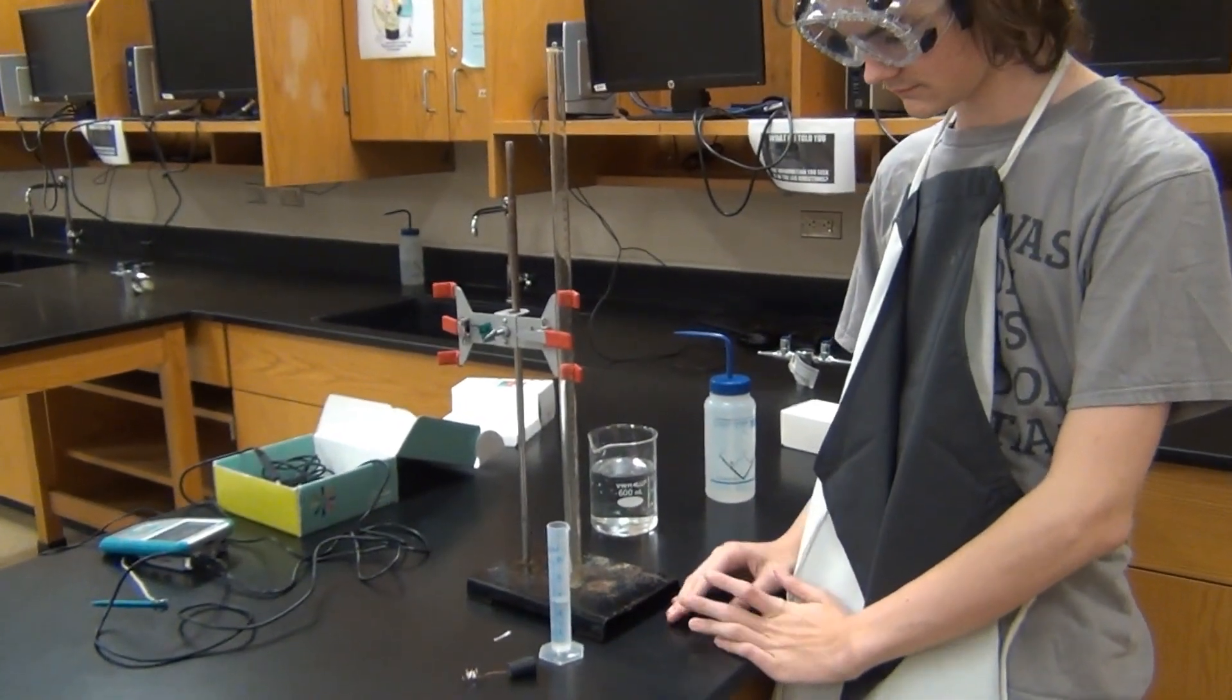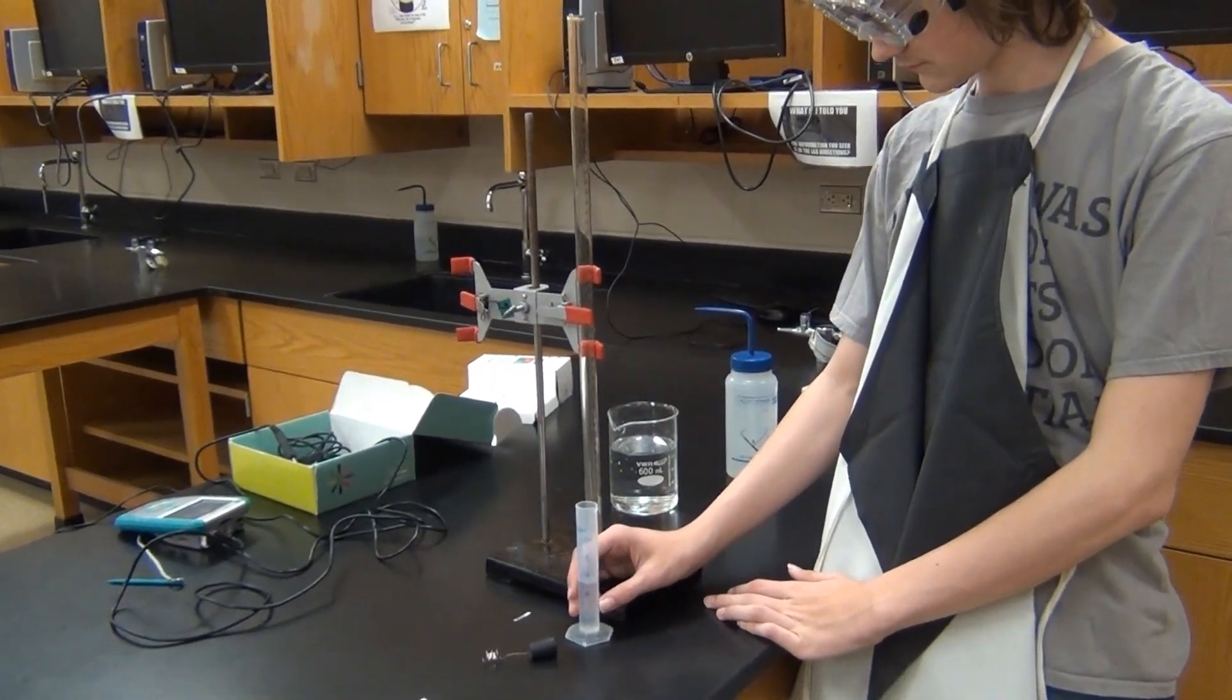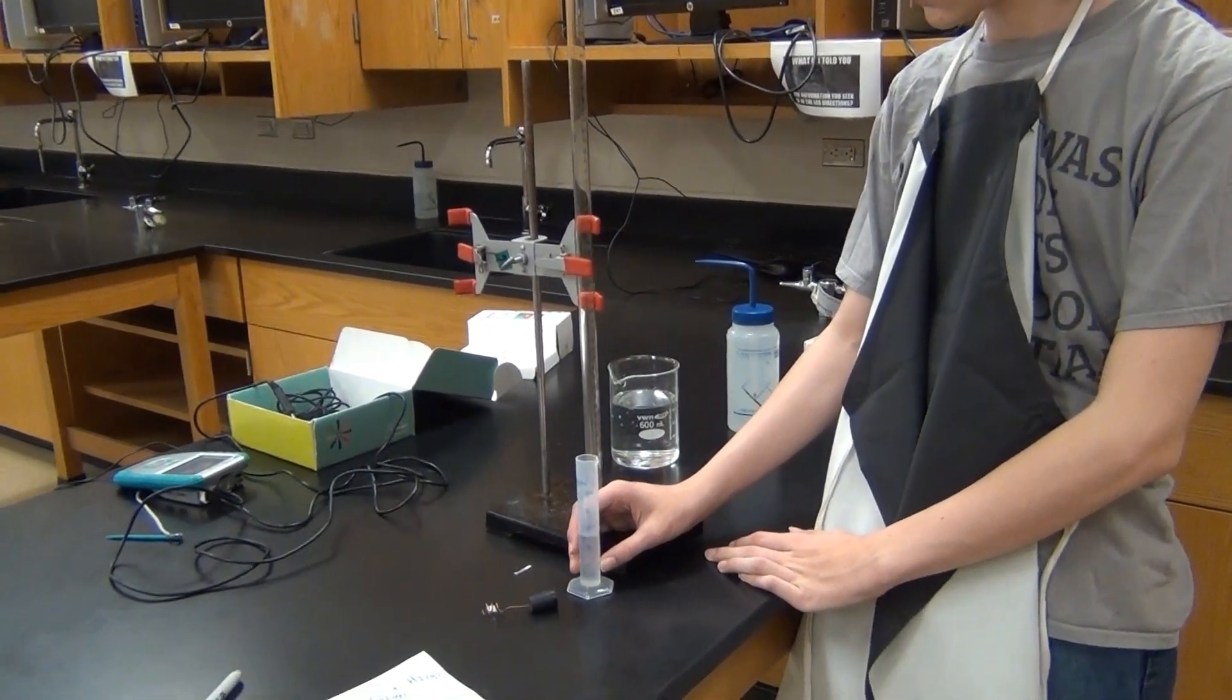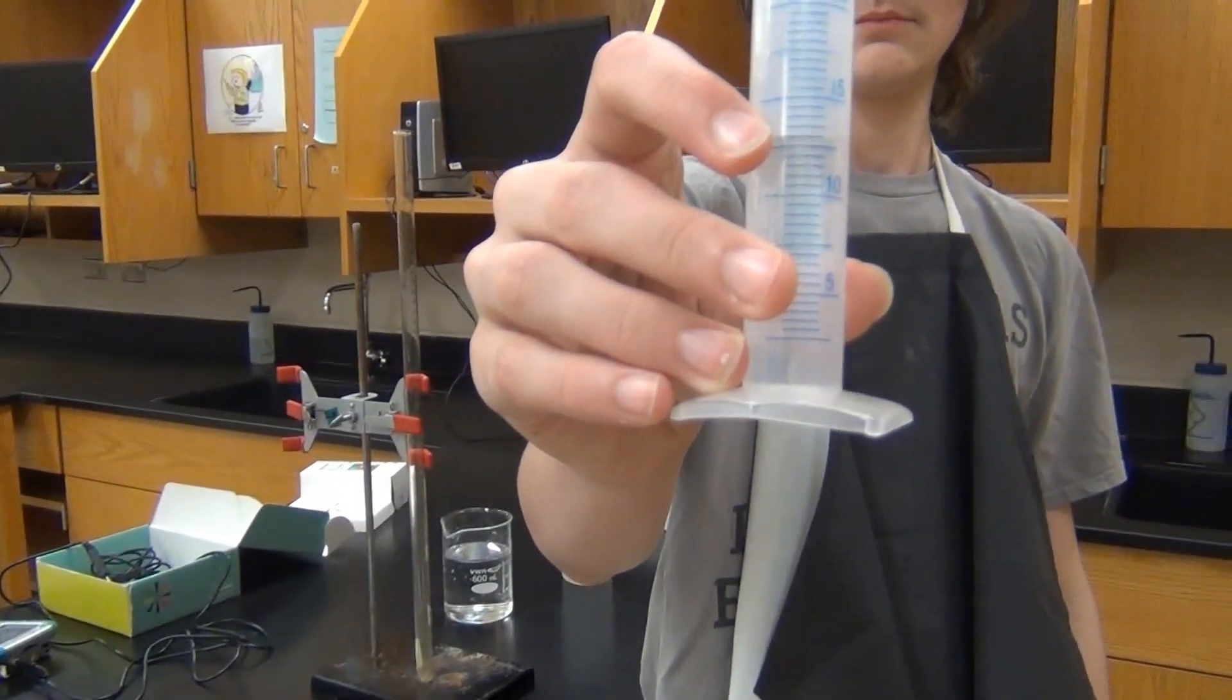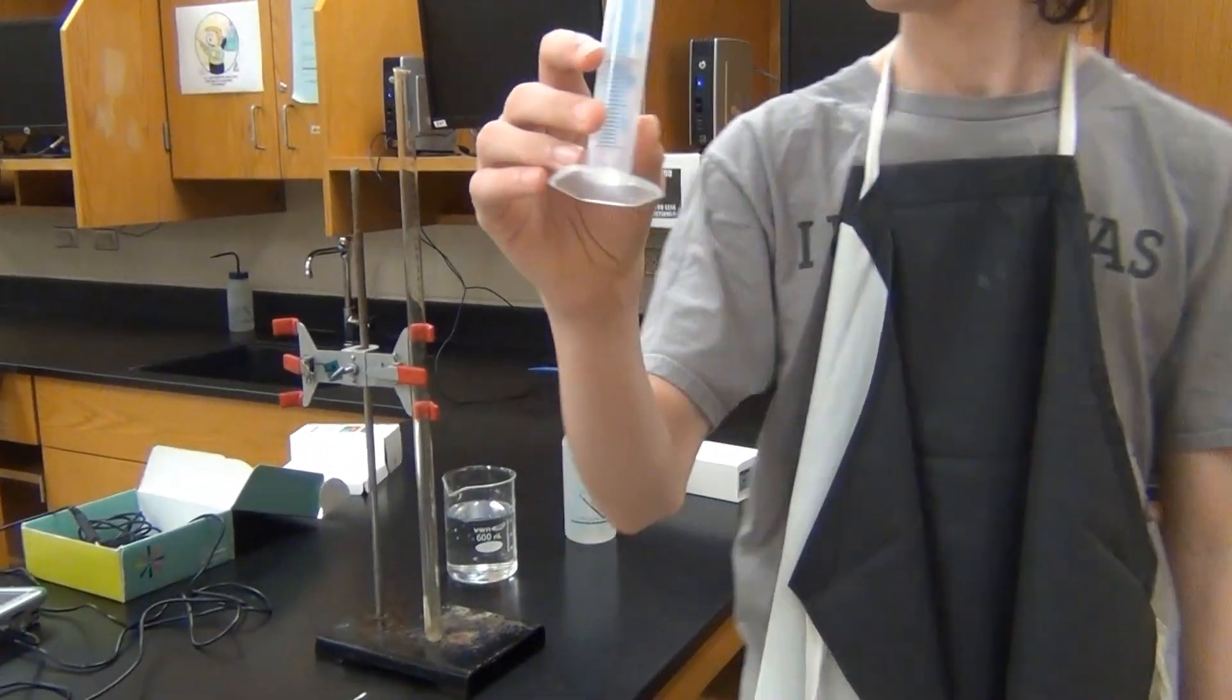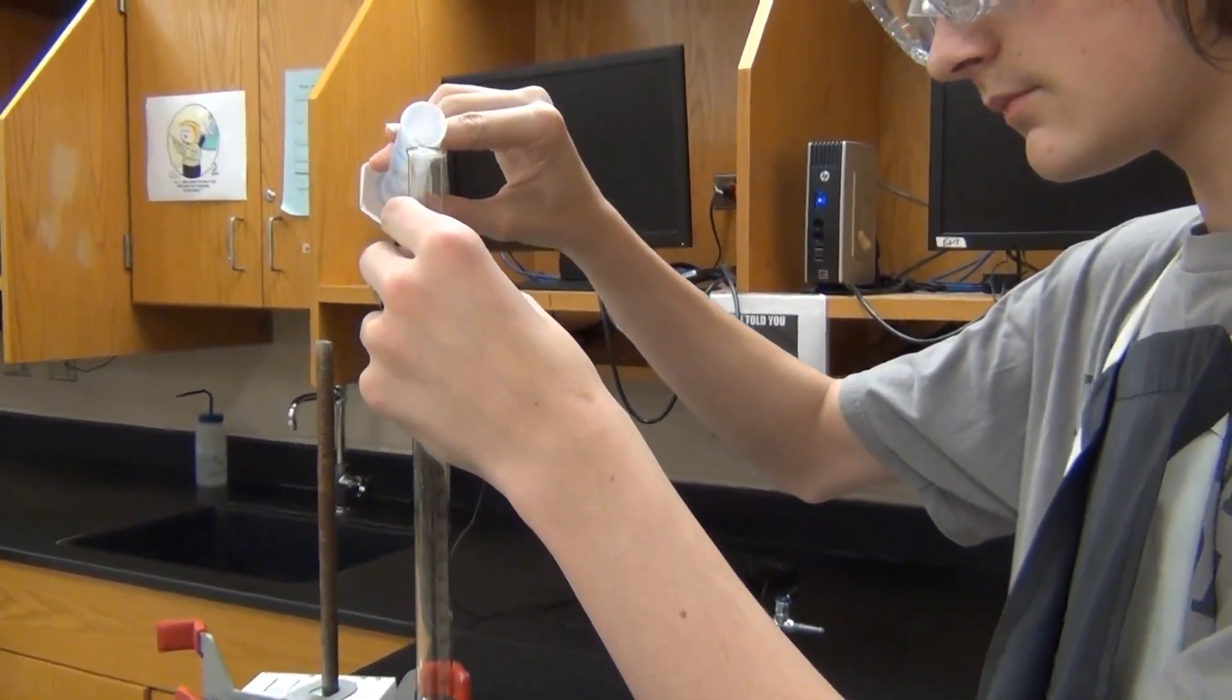So here's our setup. We have the eudiometer in a clamp so that it's standing upright right now. And we've measured out 12 milliliters of the hydrochloric acid in this graduated cylinder. And we're going to go ahead and pour that into the top of the tube carefully, watching out for fingers.